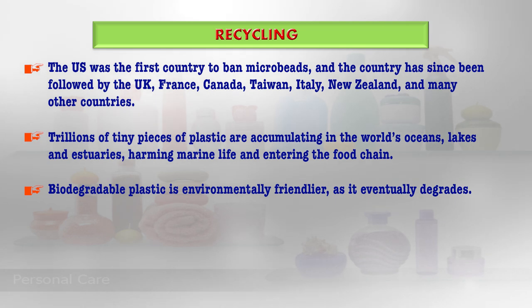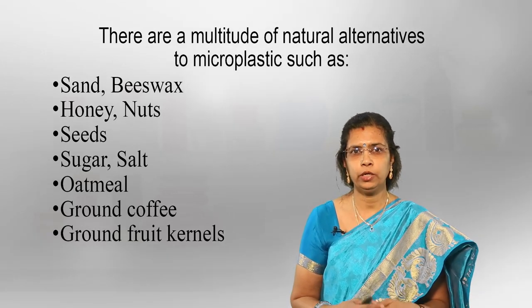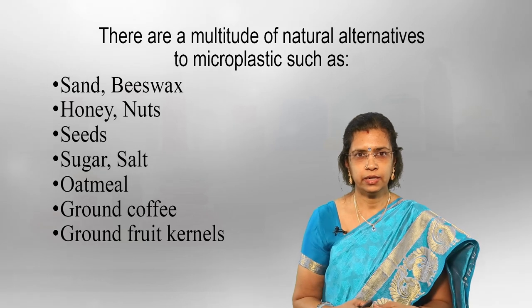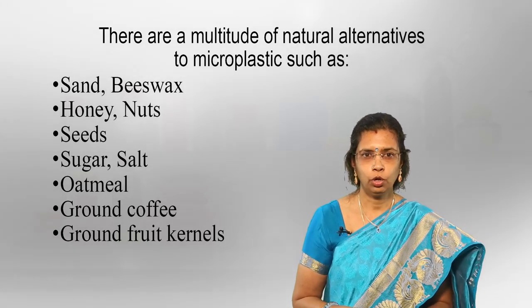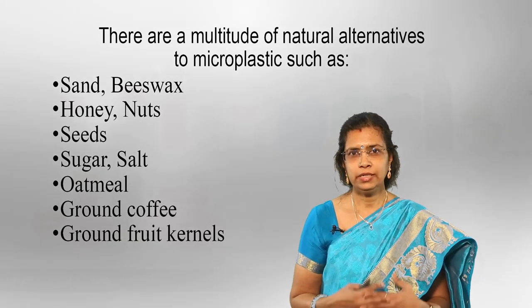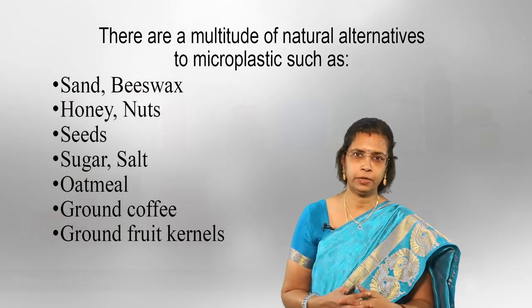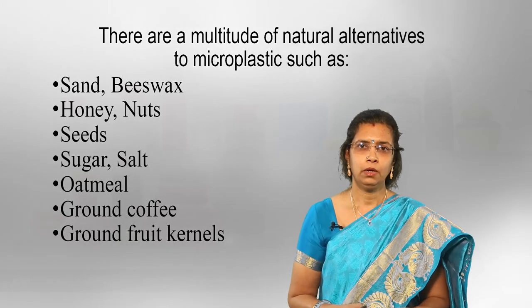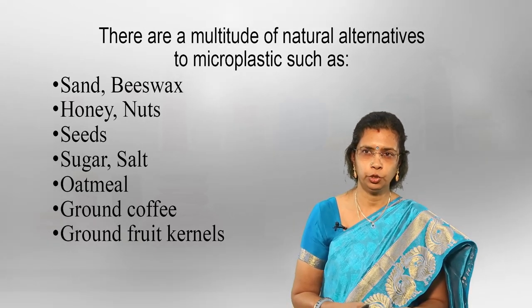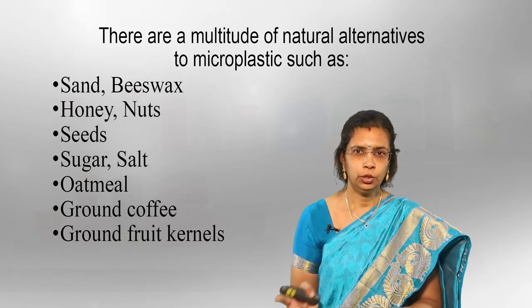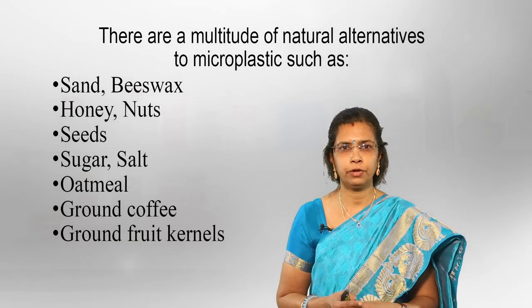The US was the first country to ban microbeads, followed by the UK, France, Canada, Taiwan, Italy, New Zealand, and other countries. Trillions of tiny plastic pieces accumulate in the world's oceans, lakes, and estuaries, harming marine life and entering food chains. Biodegradable plastic is an environmentally friendlier alternative. Natural alternatives to microplastics include sand, beeswax, honey, nuts, seeds, sugar, salt, oatmeal, ground coffee, and ground fruit kernels. Major brands — Unilever, Procter & Gamble, Johnson & Johnson, and The Body Shop — have committed to eliminating microbeads from their products. However, there are no proper solutions for cleaning microbeads from lakes, rivers, and oceans, so prevention is crucial.